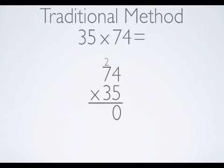I then multiply the 5 from 35 times the 7 from 74. Get an answer of 35 and I add my 2 from the regrouping, which makes a total of 37.